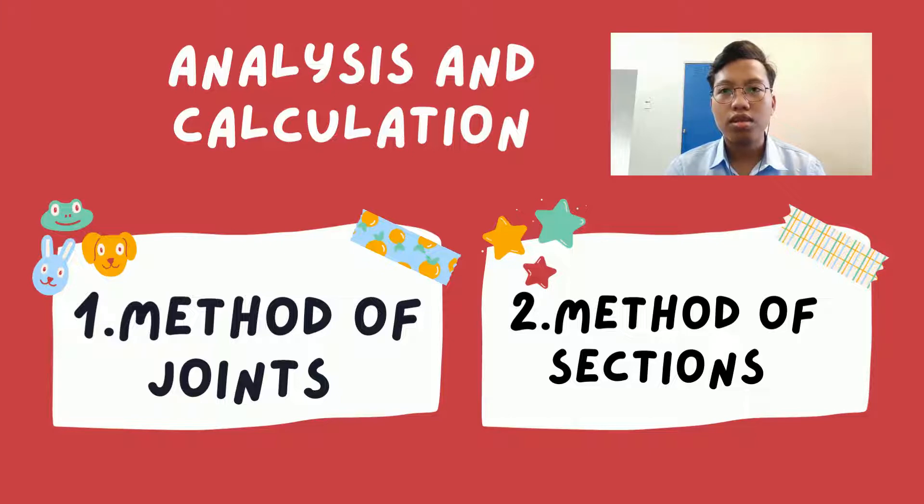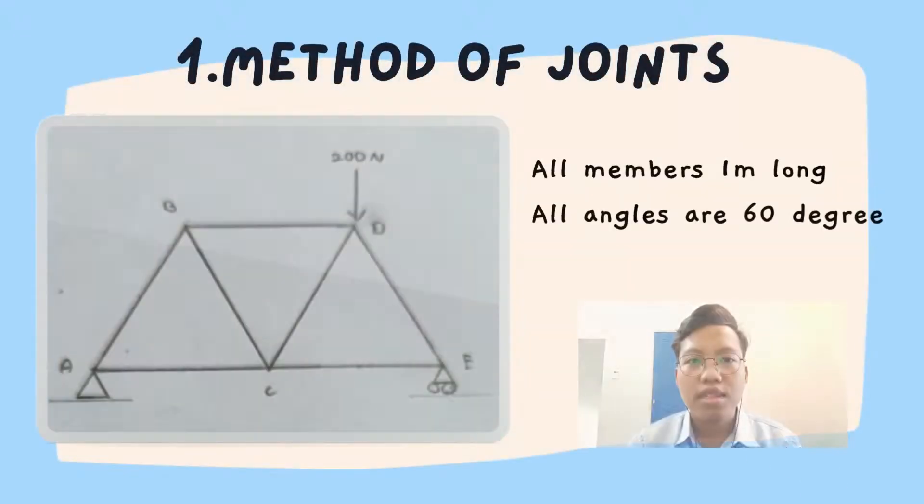Assalamualaikum warahmatullahi wabarakatuh. My name is Muhammad Saifuddin bin Ahmad Karawahi and my matrix number is AA211411. Today, I will talk about the analysis and calculation. We have two calculations, the first one is method of joints and the second one is method of sections.